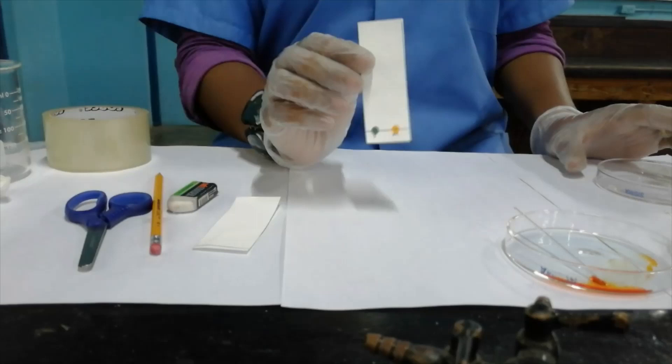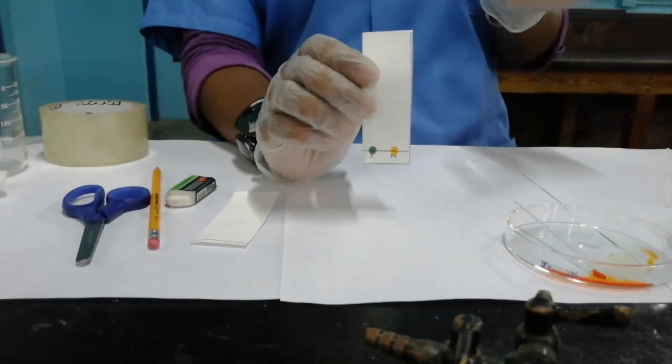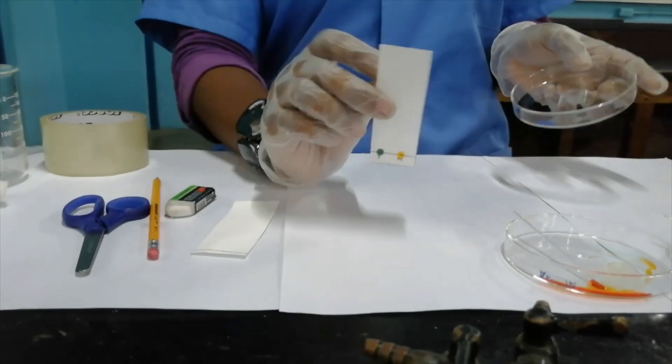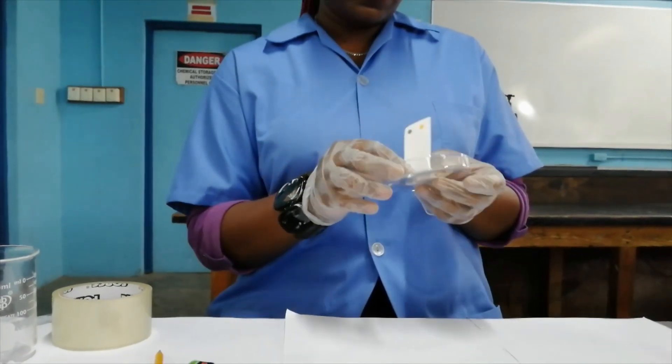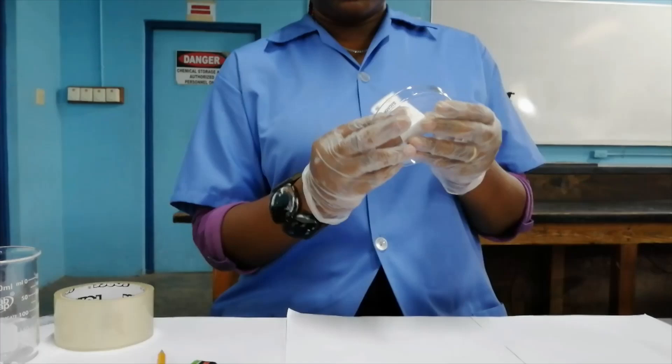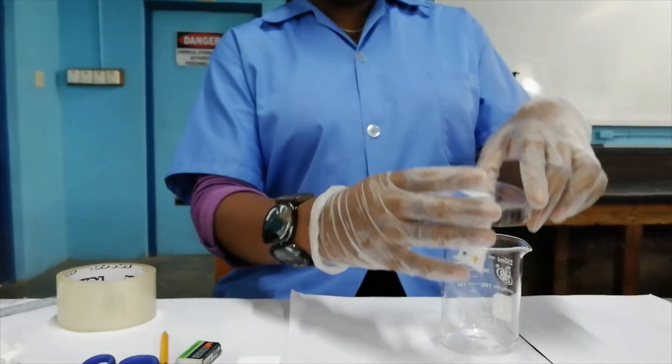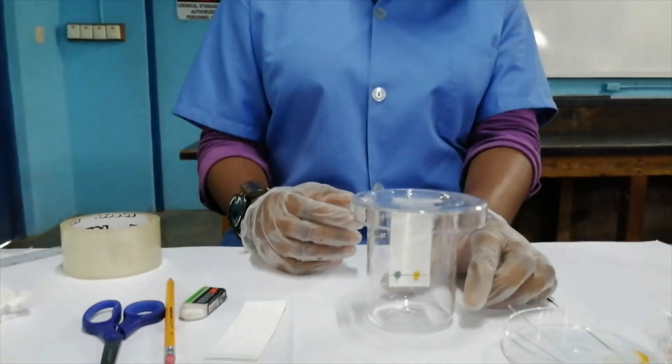I'm now going to attach this chromatograph to the petri dish. I did put a piece of tape there, so I'm going to attach it so that it hangs when I cover the beaker with it. I'm pleased with how it's hanging.